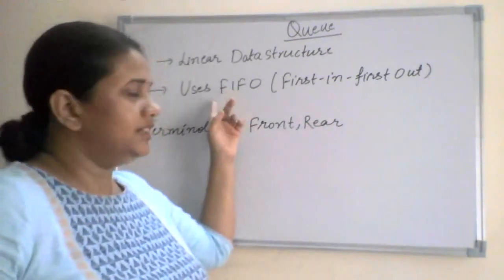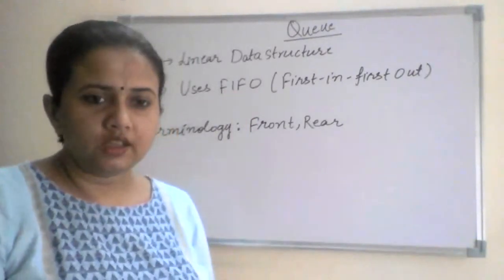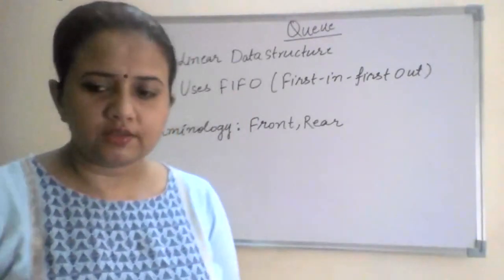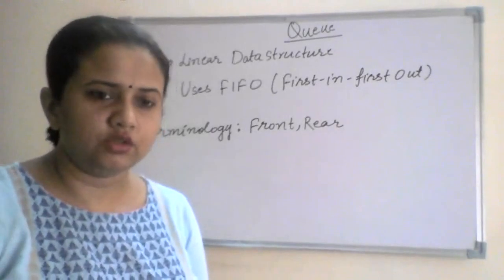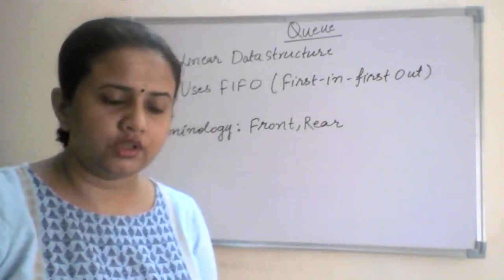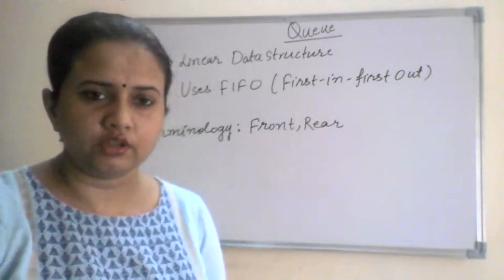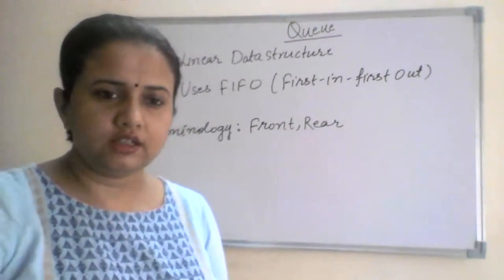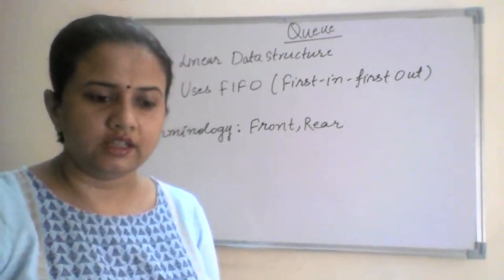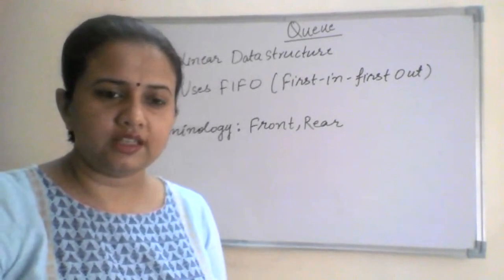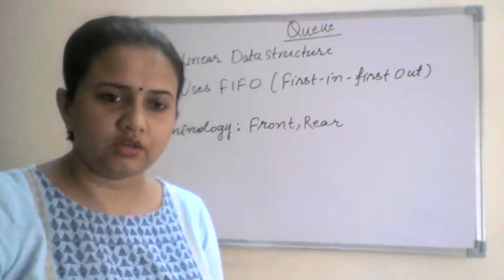Let's talk about real-life examples of a queue. You might have seen queues at many places — when you go to the bus stand to book a ticket, or when you go to the railway station to book a railway ticket, you can very well see queues there. The person standing at the front of the queue will be the one who gets the ticket first.